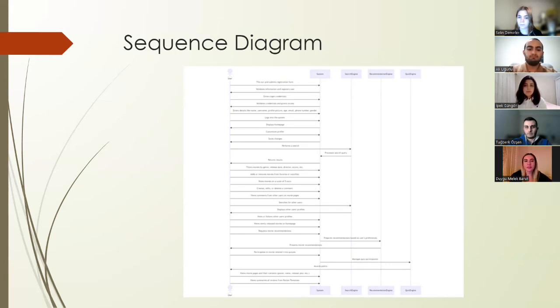For more engaged users, we have features like trivia quizzes, personalized recommendations and content exploration, including movie pages and summaries of reviews. This sequence diagram is a streamlined representation of how users interact with our platform, highlighting the flow from registration to advanced features. It's a tool that helps us visualize and refine the user journey. Now, my friend Ipek will continue.